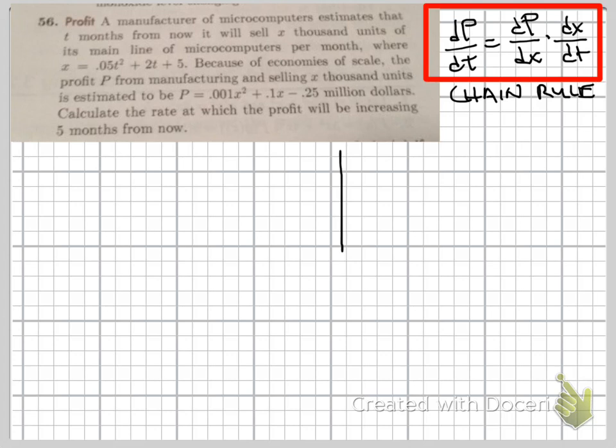Okay, so we have dp/dt. This is a word problem and luckily there's not too much confusion here. The tricky thing is they're giving us P in terms of x and then x in terms of t. What they're asking for is the rate at which profit will be increasing, and that's going to be the expression dP/dt.